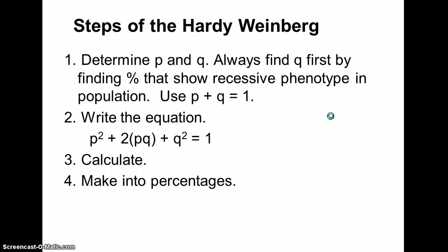For the steps of the Hardy-Weinberg, just very briefly, we need to determine what our P and our Q is, and then we're going to write the equation, calculate, and make percentages. I'll go into steps of exactly how to do this.